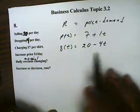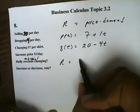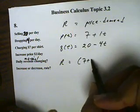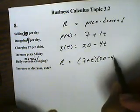So this is our price function and this is our demand function. So our revenue function will be based on price, which is 7 plus 1t, and then times the demand, which is 20 minus 4t.